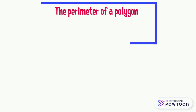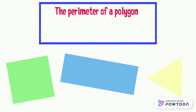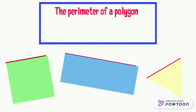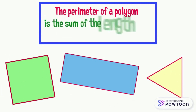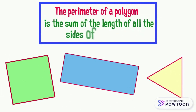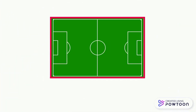In this video we only need to focus on the perimeter of the polygon. The perimeter of a polygon is the sum of the lengths of all the sides of the polygon. To find the perimeter of this football field, first you should measure the length of each side of this field.